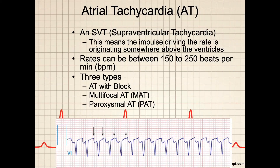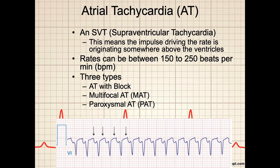One of those more serious rhythms includes atrial tachycardia, or AT. Atrial tachycardia is a supraventricular tachycardia, which means the impulses driving the rapid rhythm originate somewhere above the ventricles. Atrial tachycardia has an atrial rate from 150 to 250 beats per minute. This rapid rate shortens diastole, resulting in a loss of atrial kick, reduced cardiac output, reduced coronary perfusion, and ischemic myocardial changes. There are three types of atrial tachycardia: atrial tachycardia with block, multifocal atrial tachycardia (MAT), and paroxysmal atrial tachycardia (PAT).